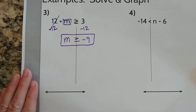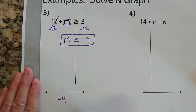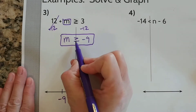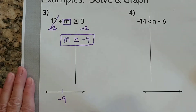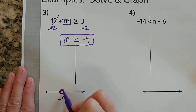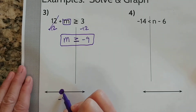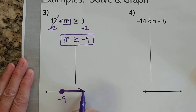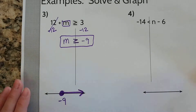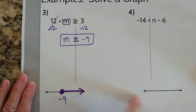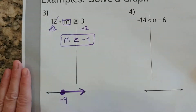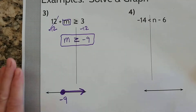Let's go down and graph it. I want a negative 9 on my number line. Because it says "or equal to," I need a closed circle. And everything greater than — the arrow points to the right. All of these are my solutions, so all of these numbers forever, for infinity, all the way to the right, are all going to be solutions to this inequality.